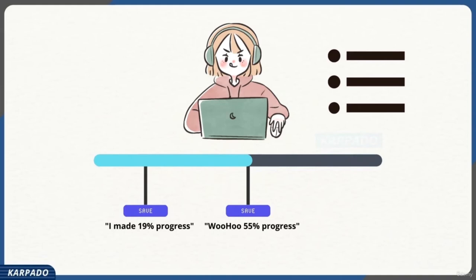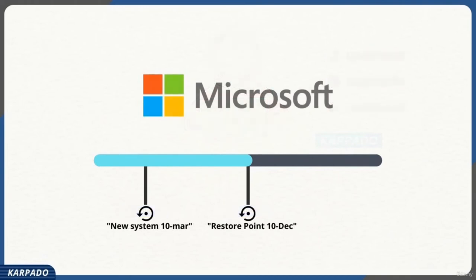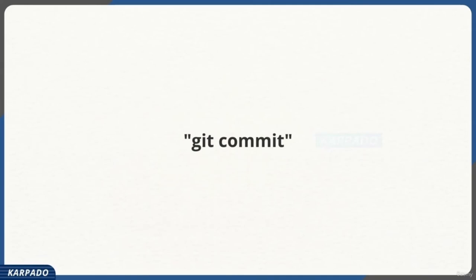For example, you can't just copy a save file to another system and load the game from that save point — but if you have a full backup of the game folder, you can. A save is essentially a snapshot, not a backup. Similarly, Windows restore points work the same way — you create multiple restore points with meaningful messages, and if something goes wrong (like a virus), you restore the system to an earlier state. Just as you have restore points for Windows or saves for a game, you have 'git commit' for your project.